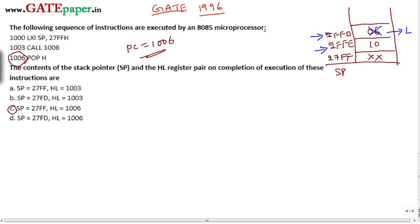So the stack pointer is going to be at 27FE and the contents of stack pointer is loaded into higher order register H. And this contents are removed and the stack pointer is incremented by 1. Now the present stack pointer is pointing at 27FF.